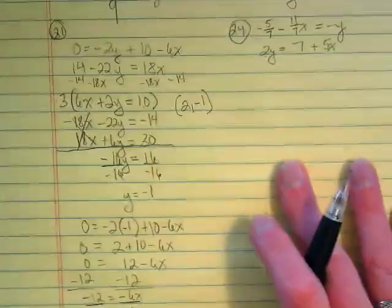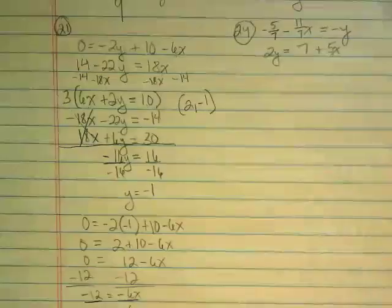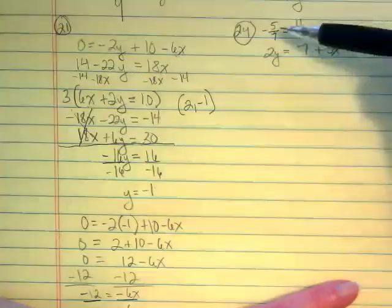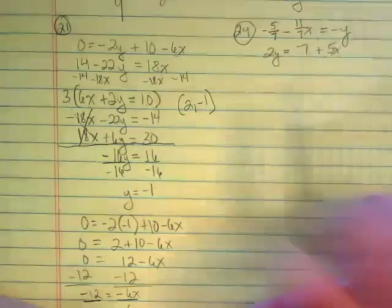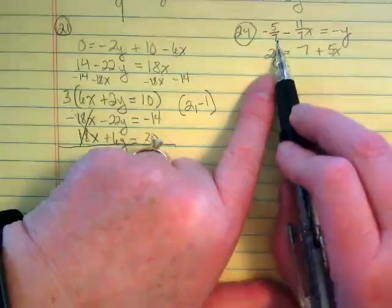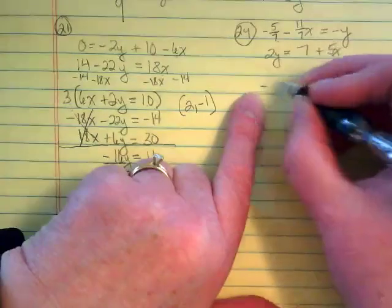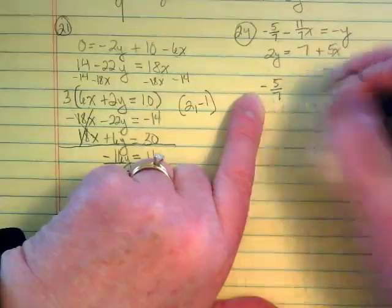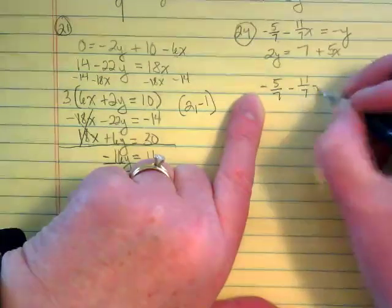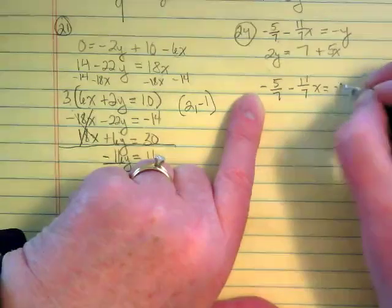So then we have this other one that looks messy. And it looks messy because of a couple of reasons. One, there's a fraction for two of the terms in the first equation. And neither of these equations are in the right form. So let's tackle the one with the fractions first. I'm going to rewrite it. Negative 5 sevenths minus 11 sevenths x equals negative y.